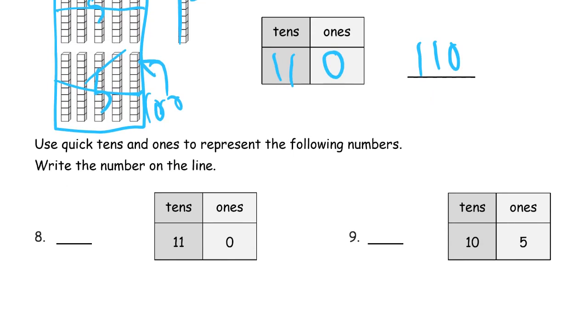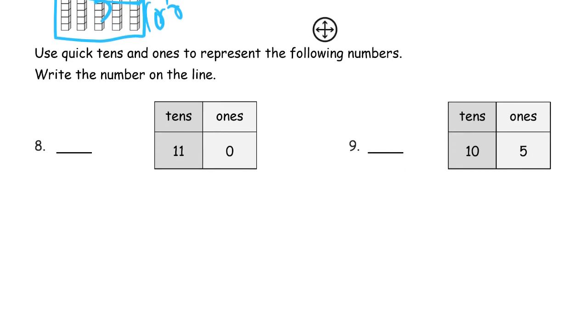Use quick tens and ones to represent the following numbers. So that means we've got to draw quick tens and write the number on the line. So here's 11 tens and zero ones. That's going to be 110. And then to draw that number in quick tens, we need 11 tens. So I'm going to draw them with five group rows. 10, 20, 30, 40, 50, 60, 70, 80, 90, 100, 110. Just like that.